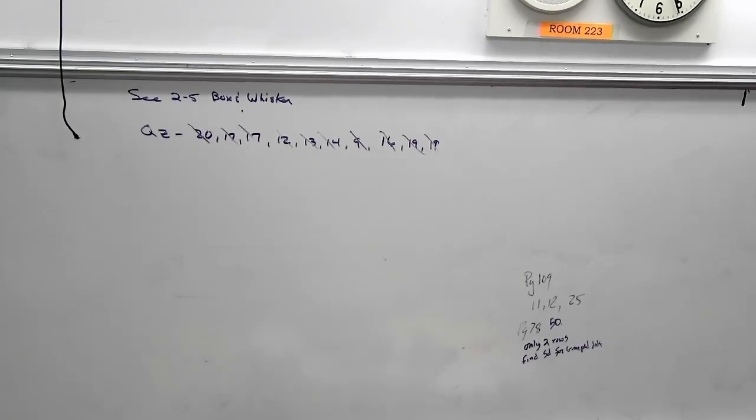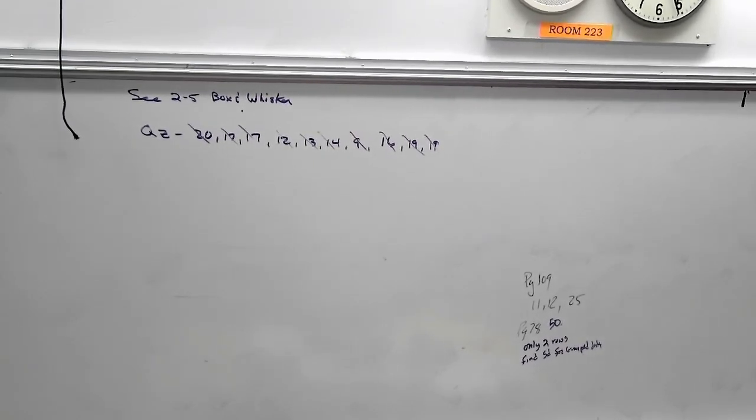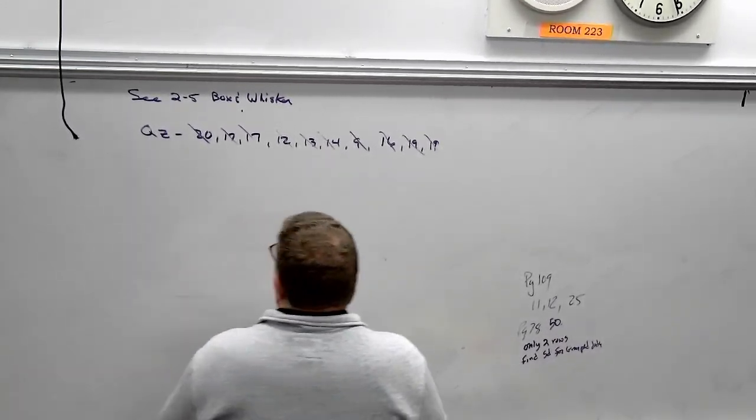Okay, let me rewrite these numbers so that you don't have lines through them. So this is section 2-5. It's a box and whisker plot.